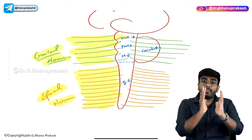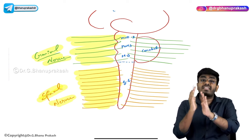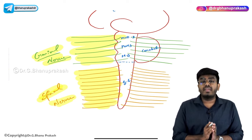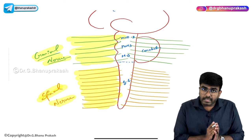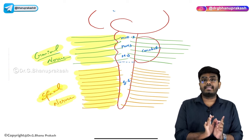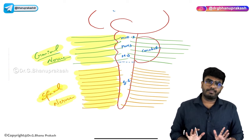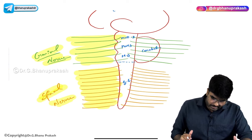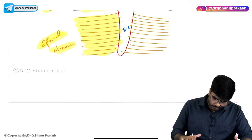Brain, brain stem, cerebellum, and spinal cord — all of them come under the Central Nervous System. This is the basic thing which you need to know.